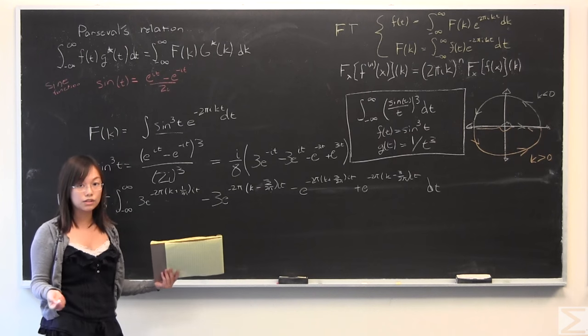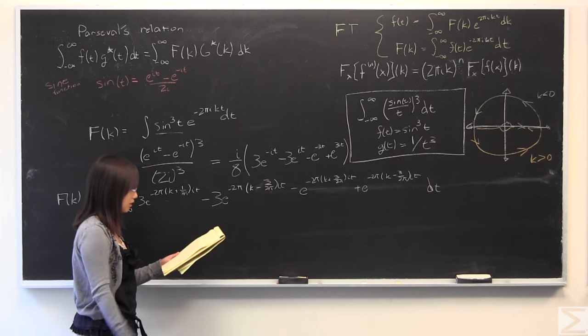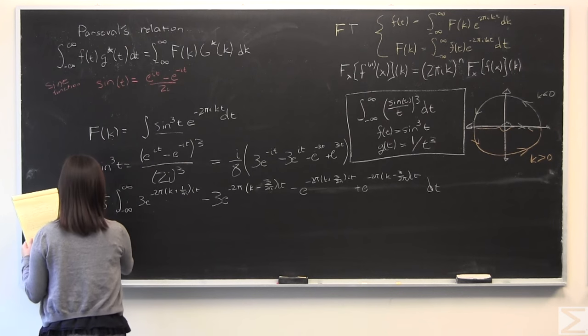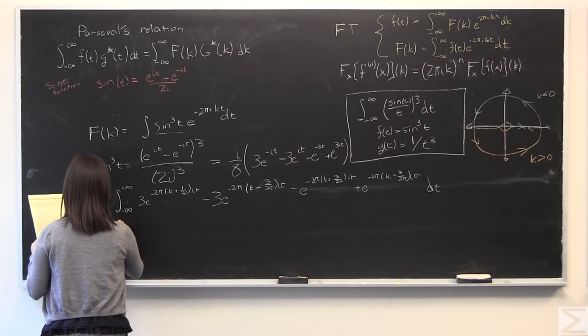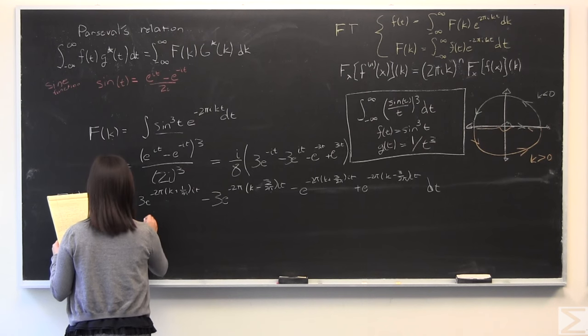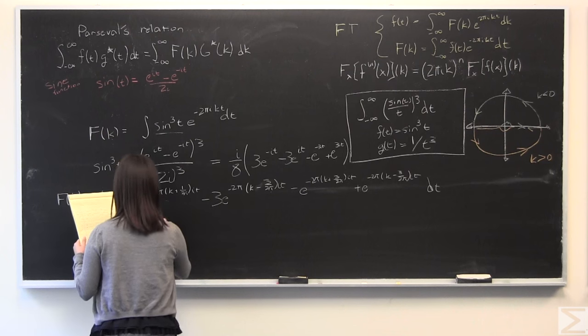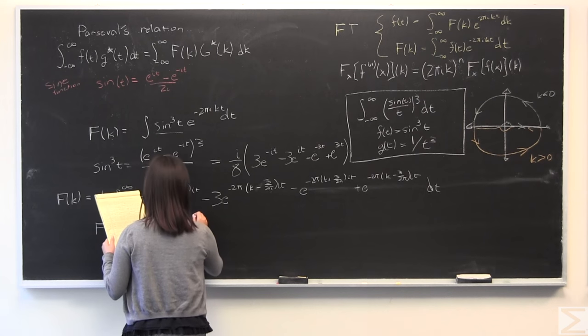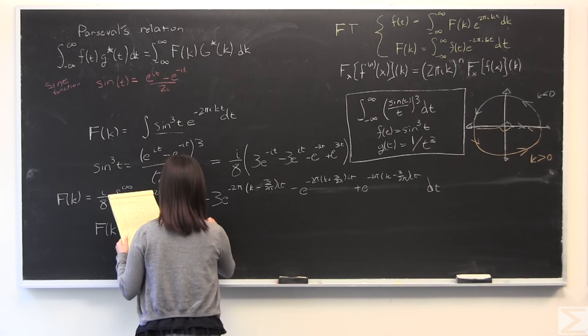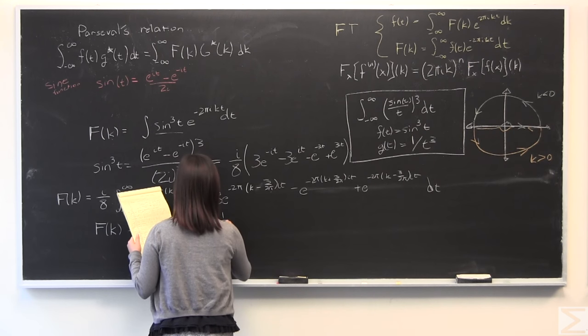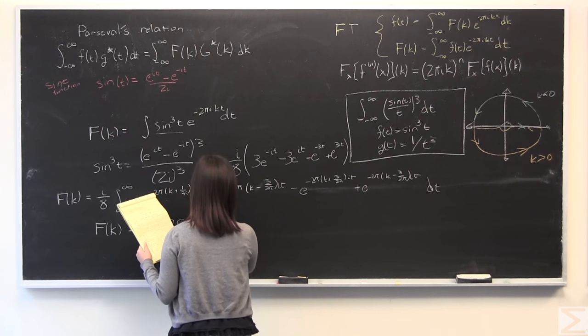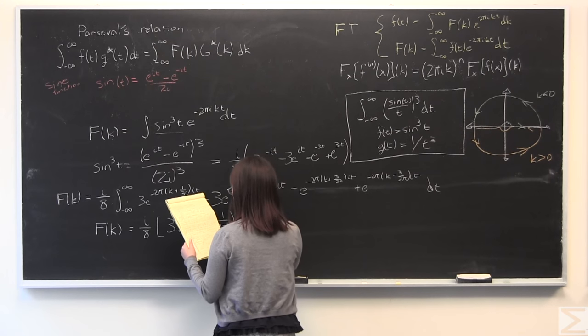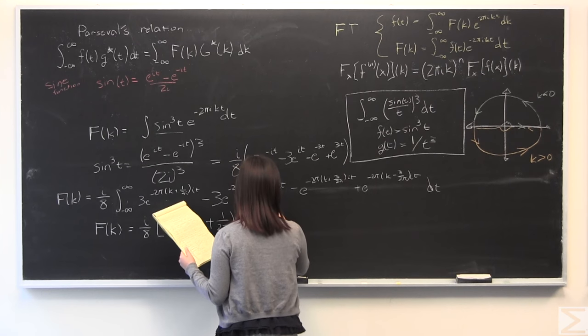So I'm going to use the definition of the Dirac delta function to just evaluate this to a bunch of Dirac delta functions added together. And then it becomes rather nice. And the very cool thing about this is that for these Dirac delta functions, they're equal to 0 in most places, except for plus or minus 1 over 2π, as well as plus or minus 3 over 2π.